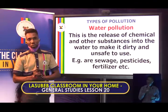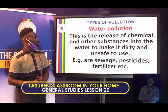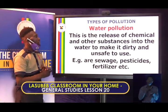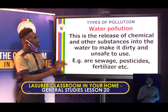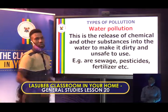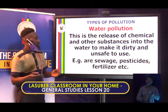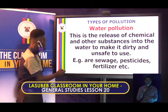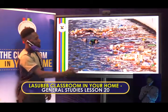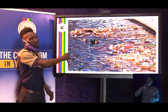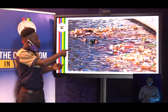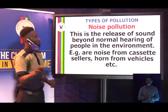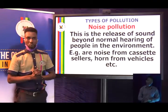The next type is water pollution. Water pollution is the release of chemicals and other substances into the water to make it dirty and unsafe to use. Pollutants that make water dirty include sewage, urine, pesticides, fertilizers, and many others. As you saw in the diagram, this kind of water you can't drink, you can't cook with, or use for other domestic chores — it is unsafe to use.